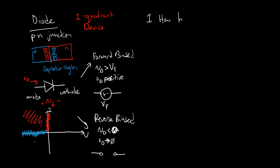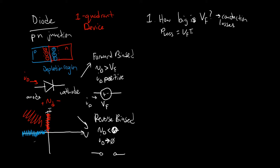We're interested in some more details when it comes to diodes. First, how big is VF? This is related to conduction losses. If VF is large, the loss across this element — ID times VF — will be larger for the same current. So typically we want diodes with a low forward voltage drop.